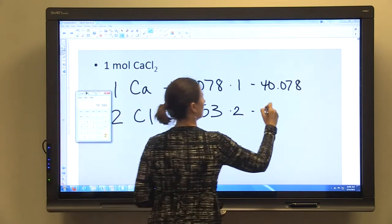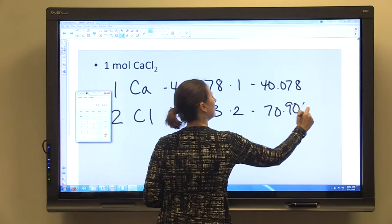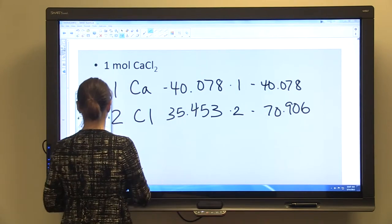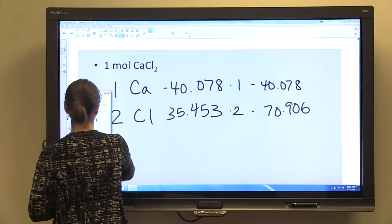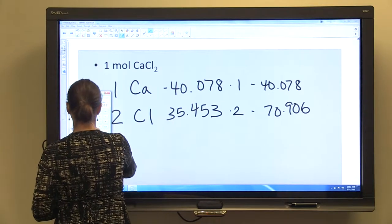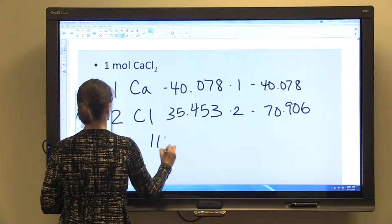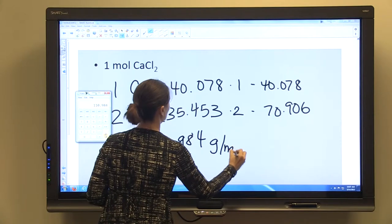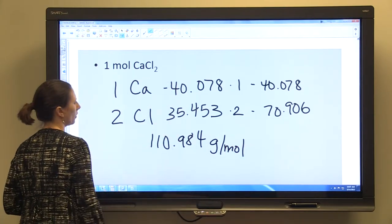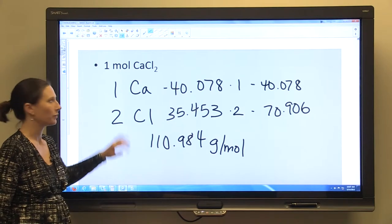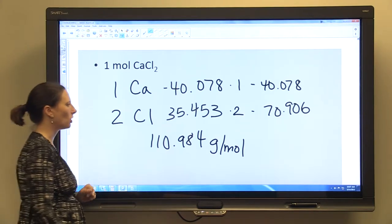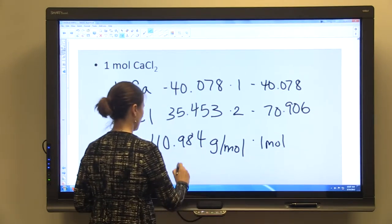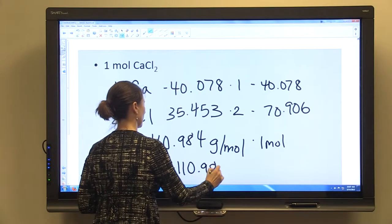The molecular weight of the molecule is the sum of these. So 70.096 plus 40.078 is 110.984 grams per mole of calcium chloride. When we need to know how much one mole of calcium chloride weighs, we multiply by one mole and we get 110.984 grams.